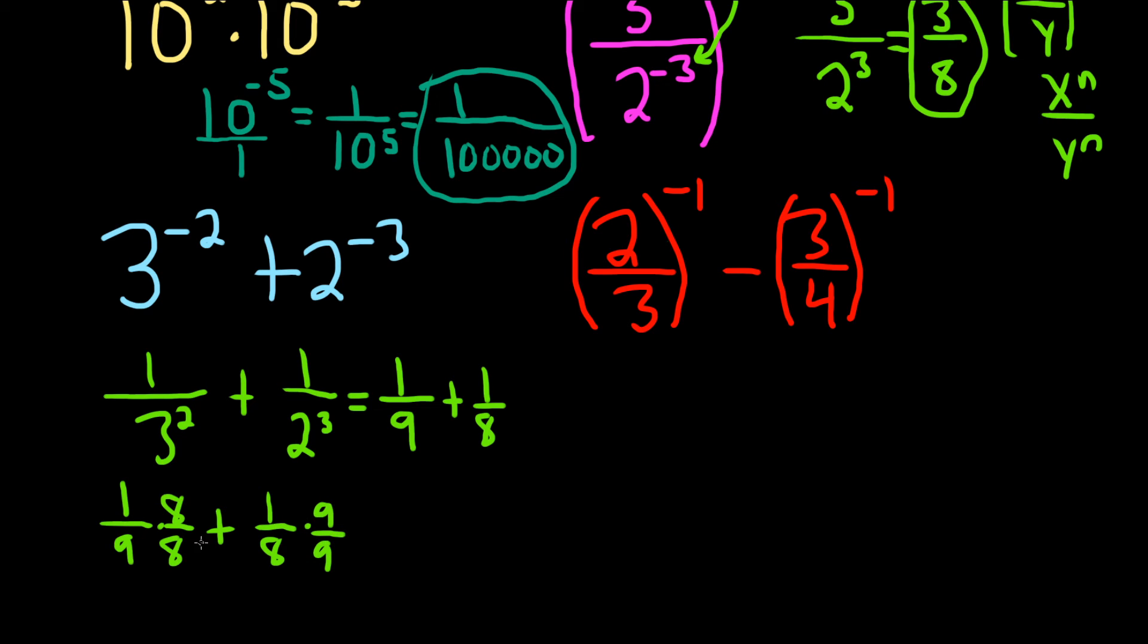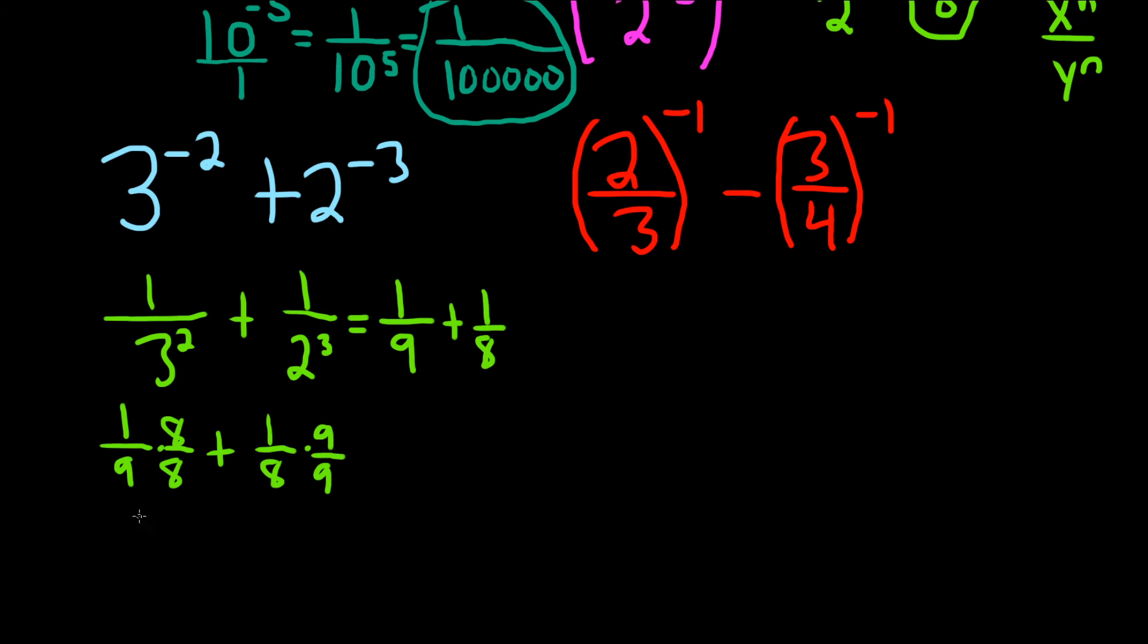And we're doing this so that we get the same number on the bottom. You can't add fractions unless the number is the same on the bottom. So this will be 8 over 72 plus 9 over 72. And now you can add that straight across. 8 plus 9 is 17 over 72.